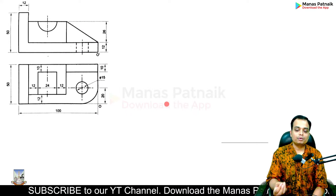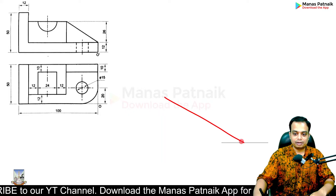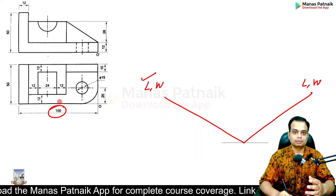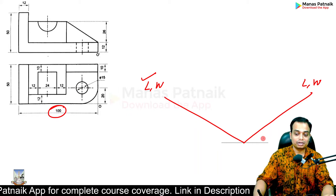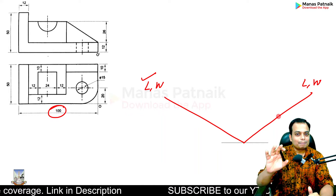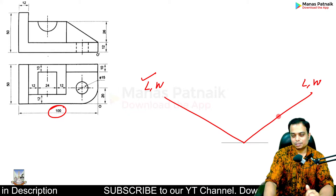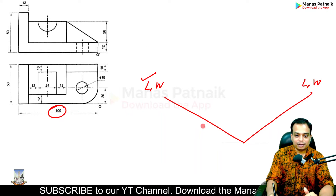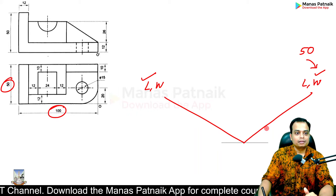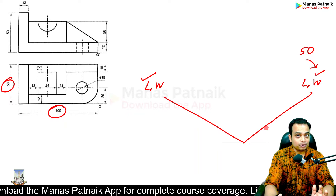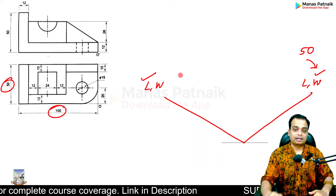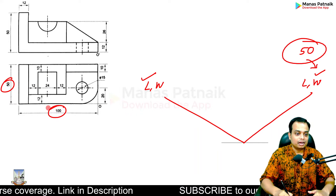The first thing is to decide where you are going to place your length. I'm going to choose the length of 100 millimeters along this side. If you choose the length of 100 millimeters over to the other side, the view appears slightly obstructed and the perspective is not that good. I would suggest picking the length as 100 millimeters on this side, and then choose the width — which is equal to 50 millimeters — on this side. The final isometric drawing is going to look very, very good.